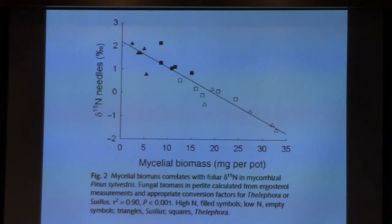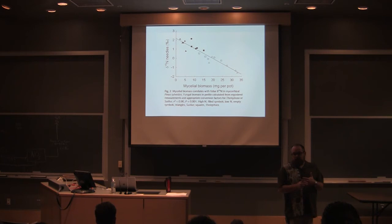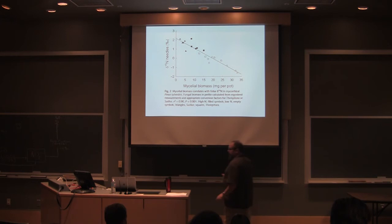What we're seeing here is these are ectomycorrhizal fungi and they're fractionating, and you're seeing a depletion in the foliage. Two big points: one is that a plant can be a phytometer for what's going on below ground. Often leaves can give us information, and plucking leaves off of plants is a lot easier than digging up and purifying mycorrhizal fungi and trying to do process rates within the soil.